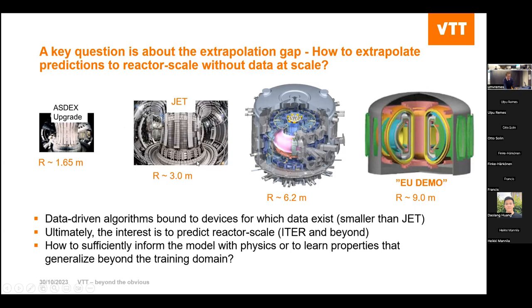Ultimately we want to predict disruptions at reactor-scale facilities like ITER and beyond. But when we actually get to reactor scale, we can no longer generate a database of disruptions because we want to avoid them in the first place. The question is how to develop algorithms that are sufficiently informed by physics to learn properties that generalize beyond the domain where they are trained. This is fundamentally the key challenge with data-driven methods for disruption prediction.